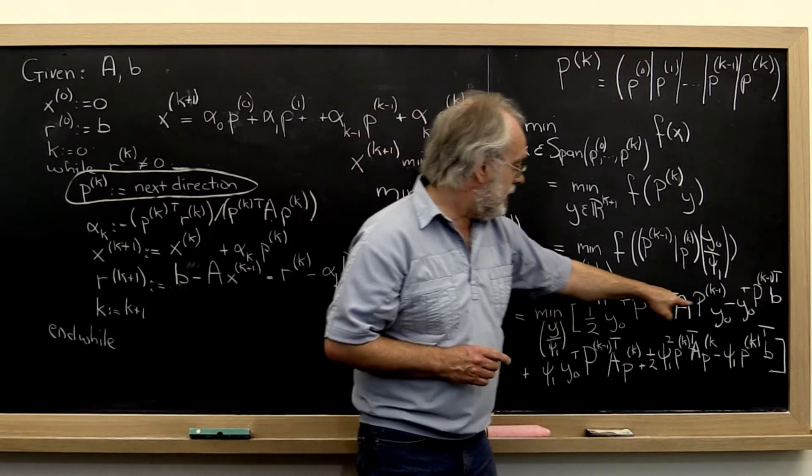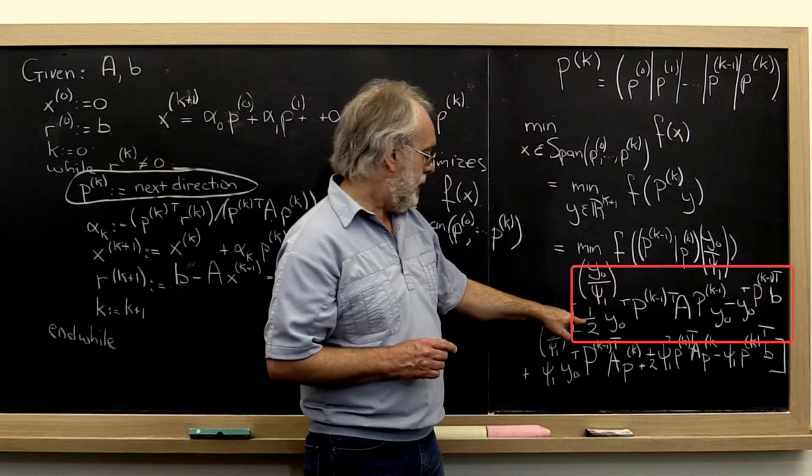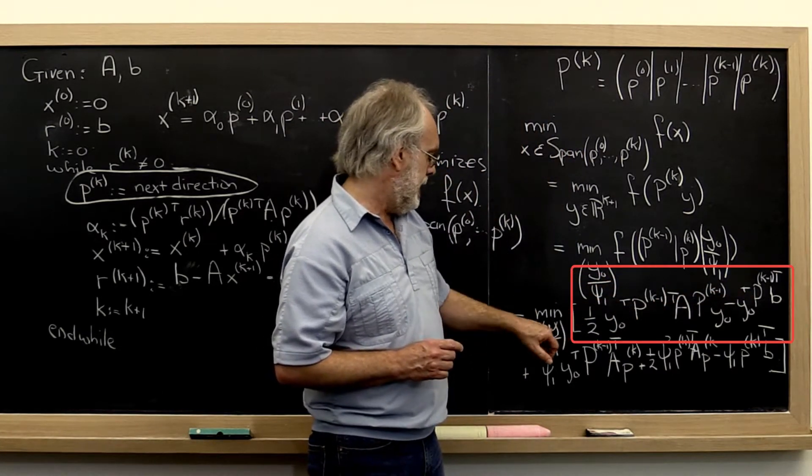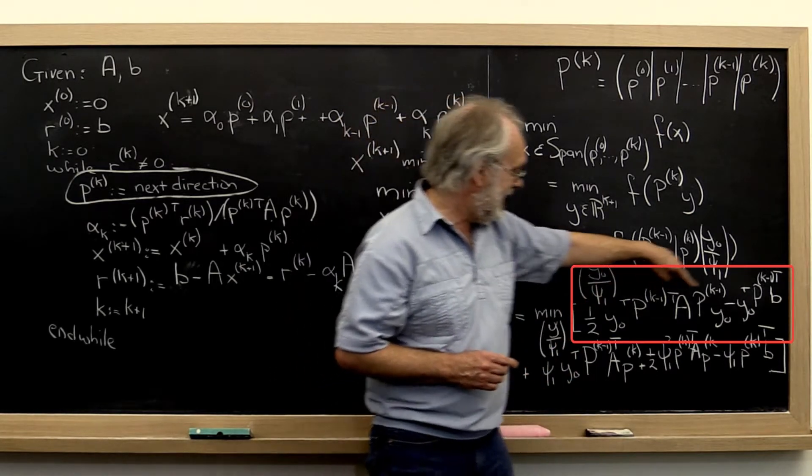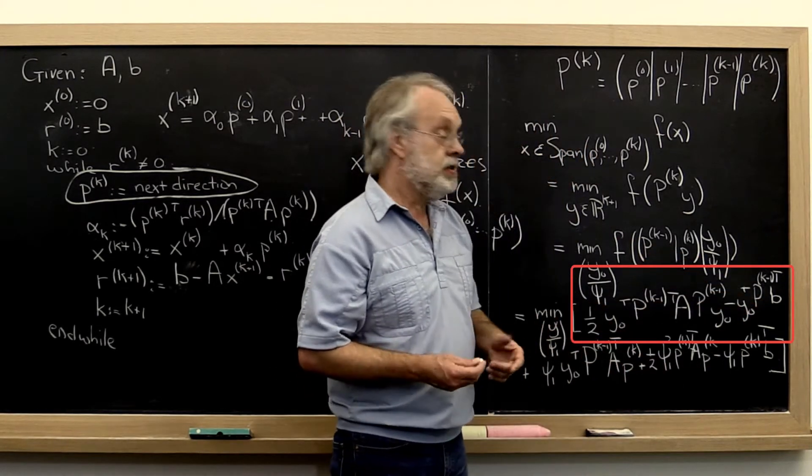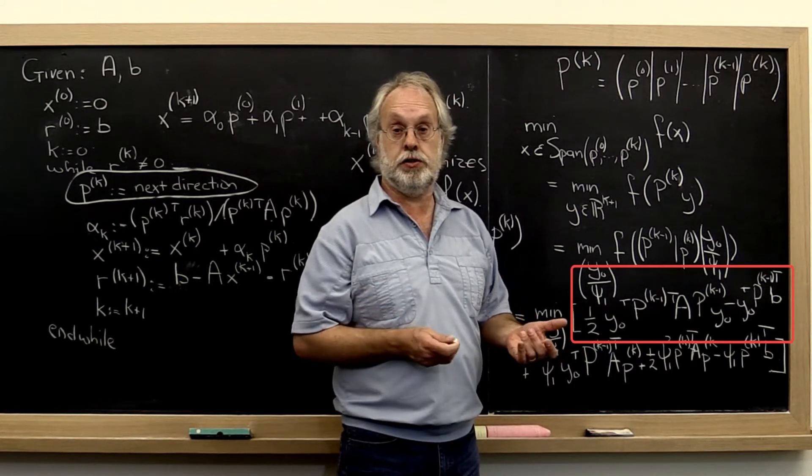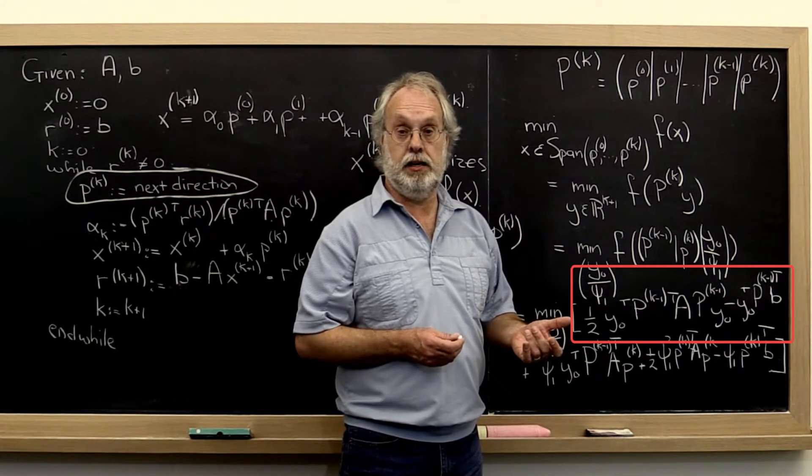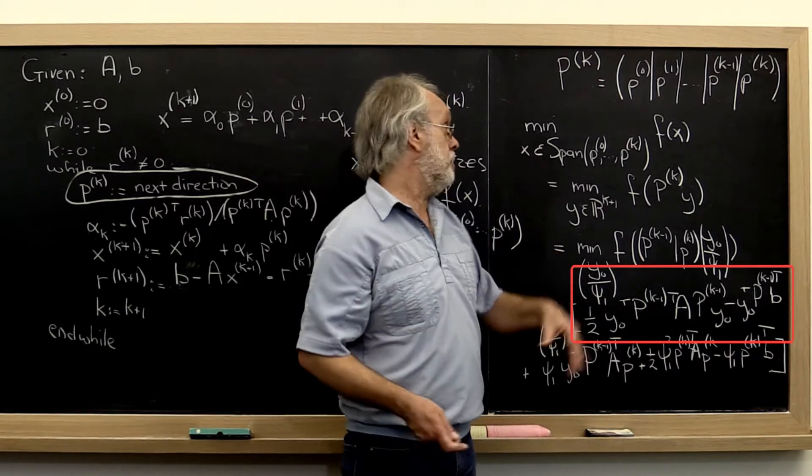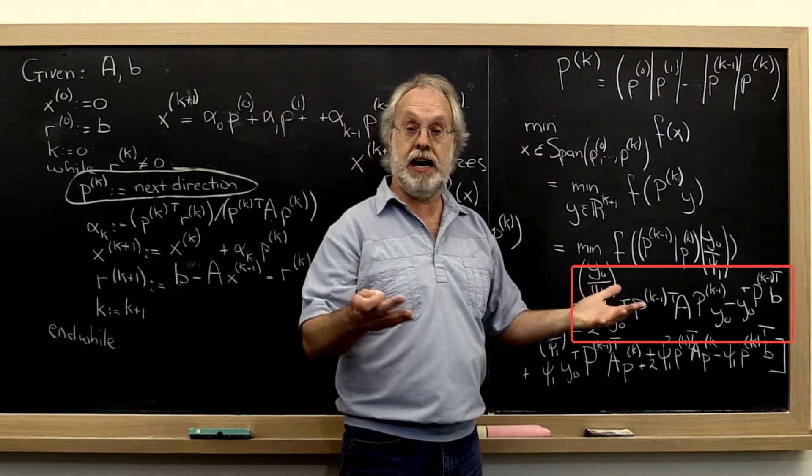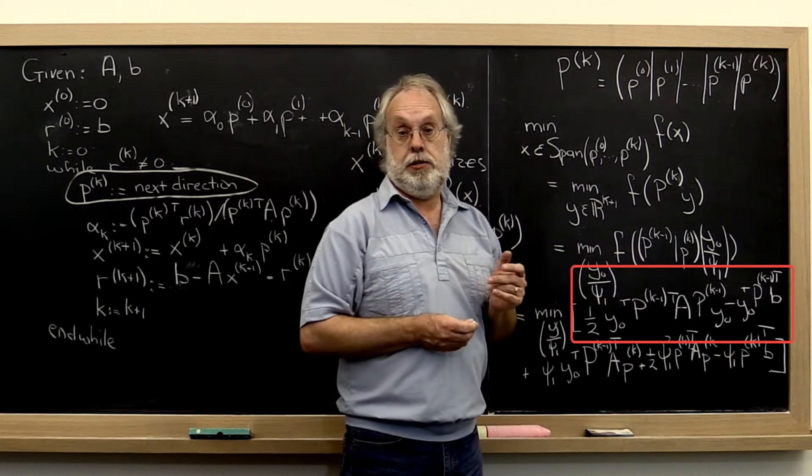If you look at this part right here, that looks an awful lot like if we minimized it, we would get the current solution or approximation to the solution xk. If that had the property that it minimized over the span of all of the previous search directions.